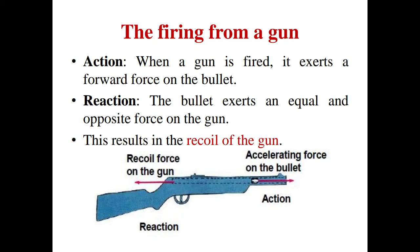This coming of the gun in backward direction is termed as recoil of the gun. The question can be: why is recoil in the gun produced when a bullet is fired? This can be explained on the basis of Newton's third law of motion. Because the gun applies force on the bullet in forward direction — that is the action force — and due to the reaction force which the bullet applies on the gun, the gun comes in backward direction.